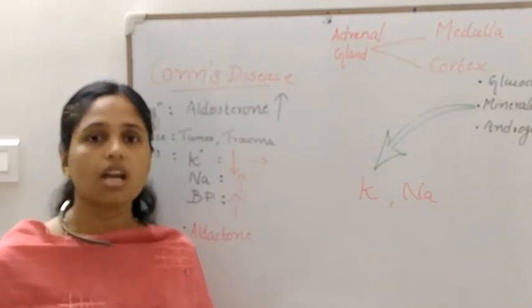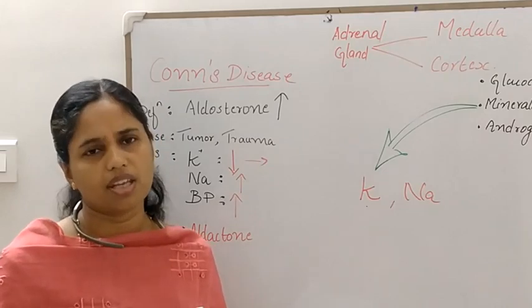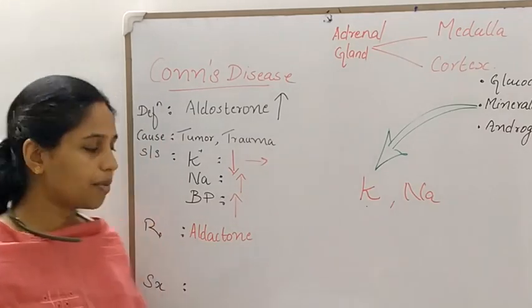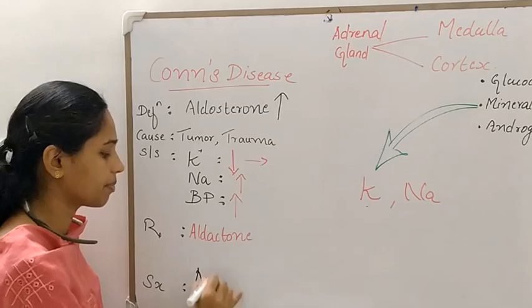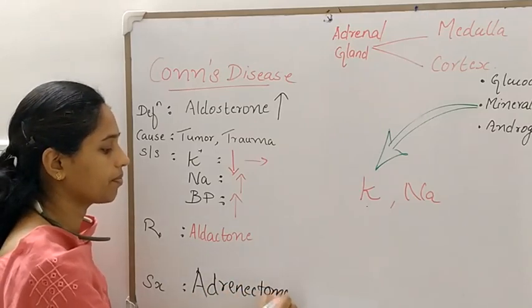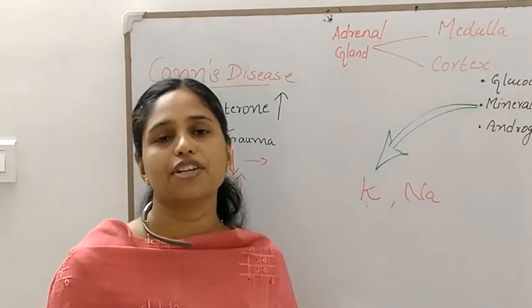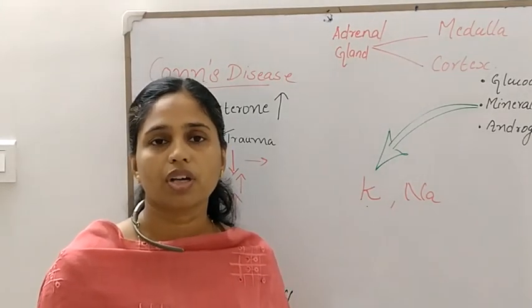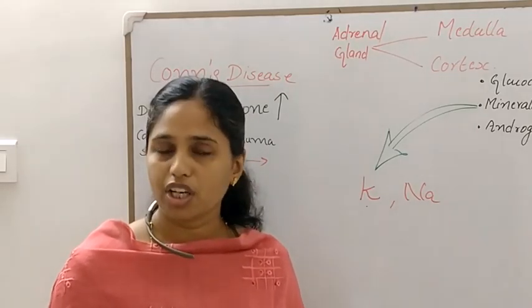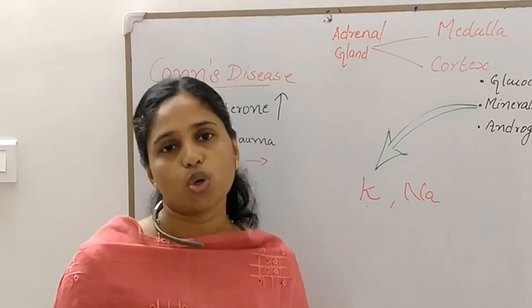Surgical correction may also be performed, as the adrenal cortex is producing excessive hormones. The surgical correction is adrenalectomy. In summary, hypersecretion of aldosterone causes Conn's disease.